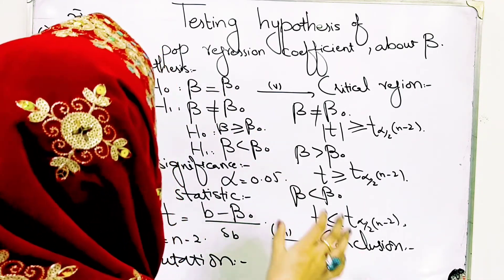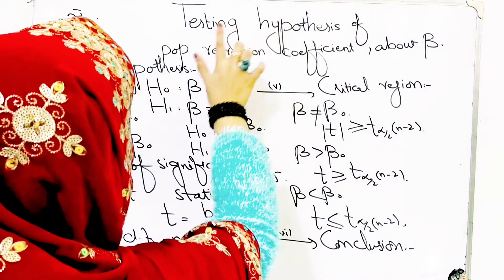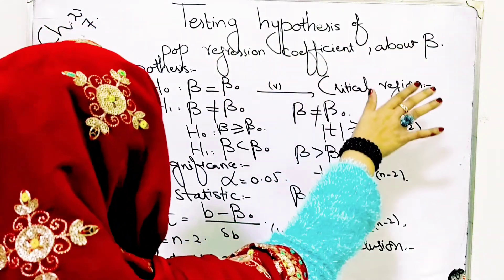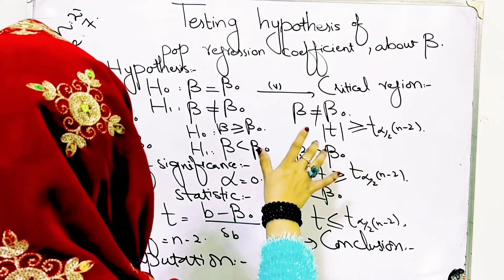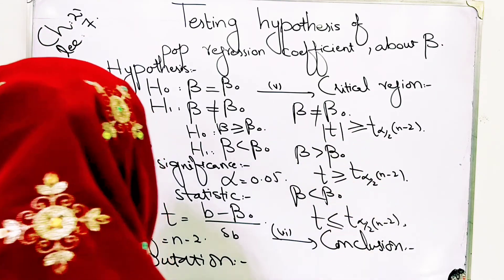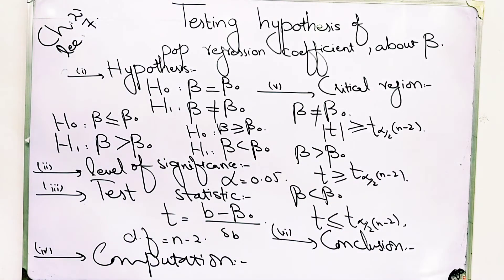This is the general procedure for testing hypothesis of the population regression coefficient about beta. This is related to the examples we will be solving. I hope students understand the general procedure and the main formula I have written. I hope students like my lecture, and we will discuss some problems. Allah Hafiz.